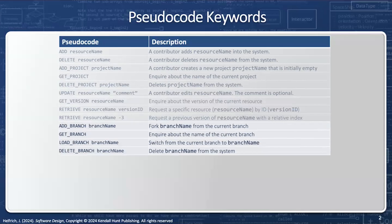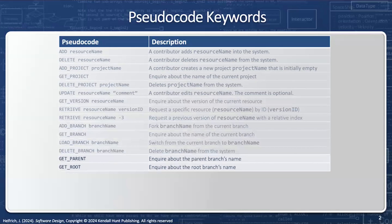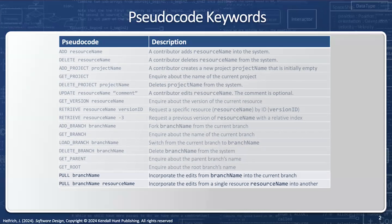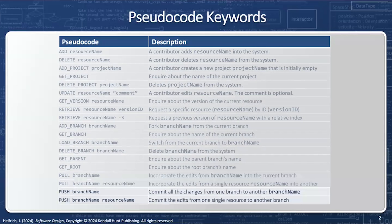You can add a branch, get a branch, and load a branch. And finally, you can delete a branch. You can get the parent to a given branch or get the root from a given branch. You can pull from a branch, or even pull from a branch a specific resource. And of course, you can push to a given branch, including pushing just a specific resource to a branch.